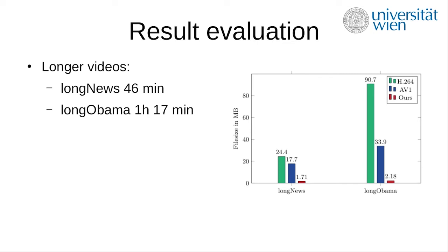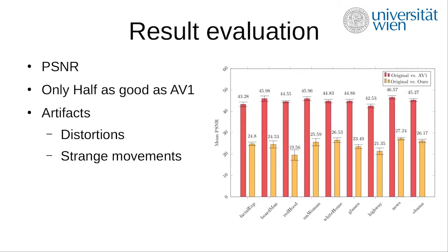While the long news videos were 46 minutes long, the long Obama video was 1 hour and 17 minutes long. Here the file sizes are shown in megabytes because of the long videos. Although these results are impressive in regard to file size, we did not achieve equally impressive results in terms of video quality. Comparing the original video to AV1 encoding and our approach, the quality of our videos measured in PSNR was only about half as good as the AV1 encodings.